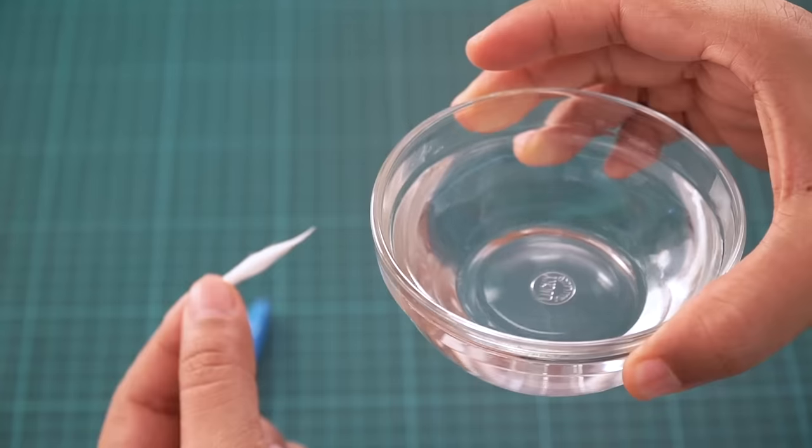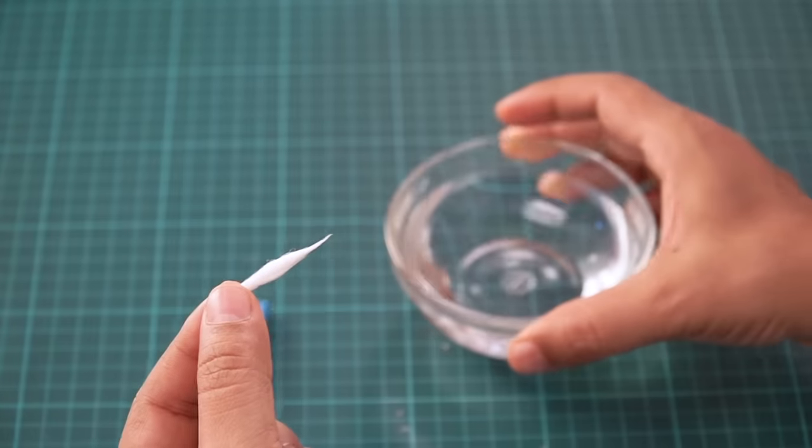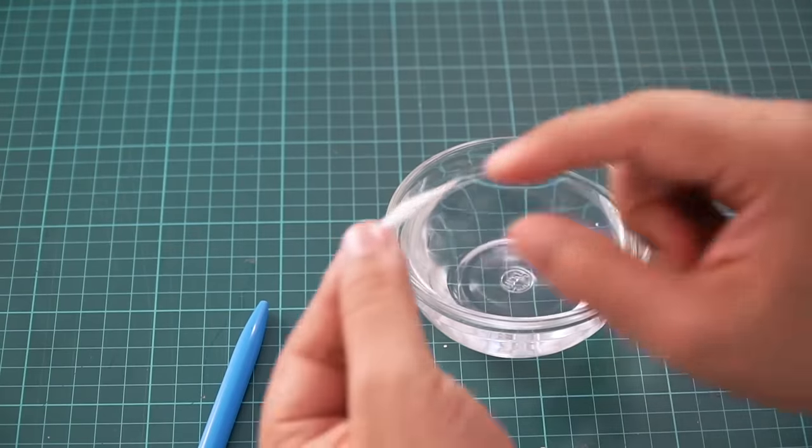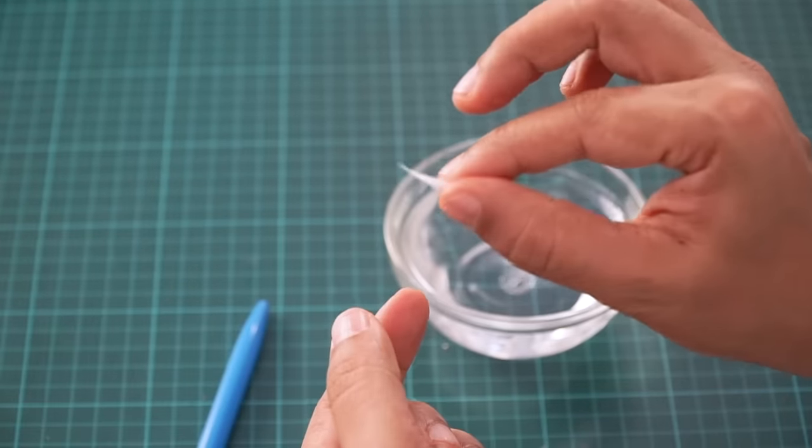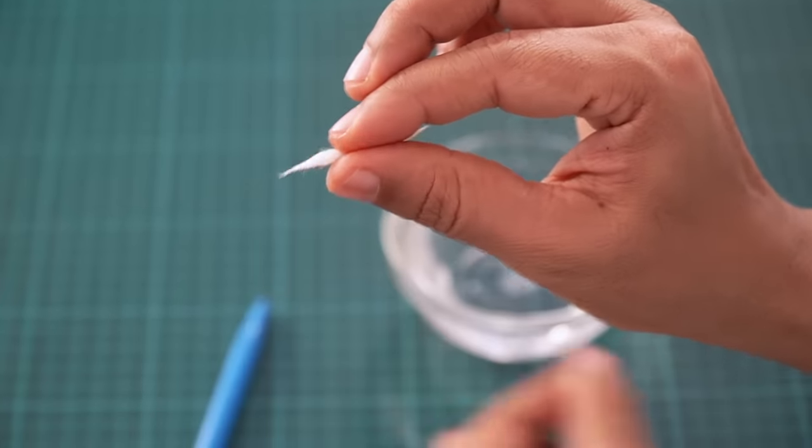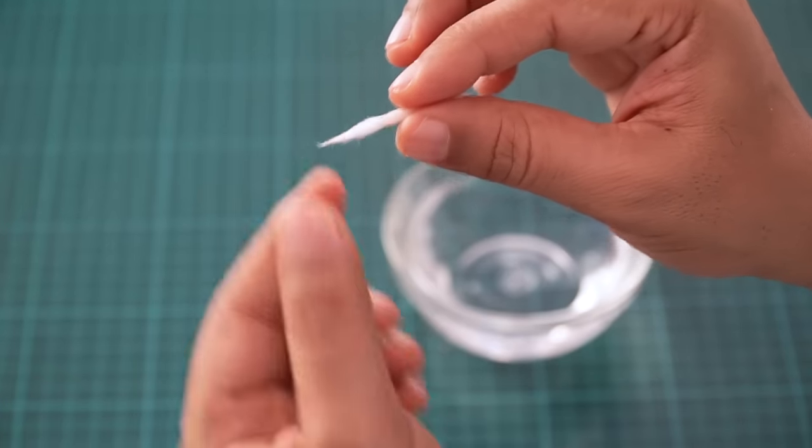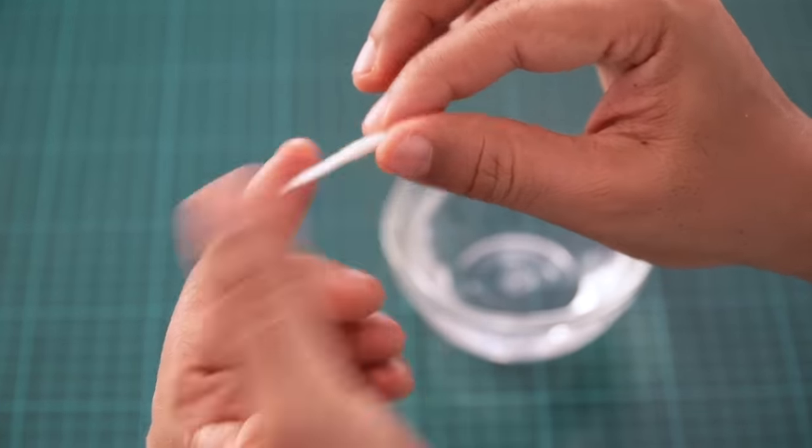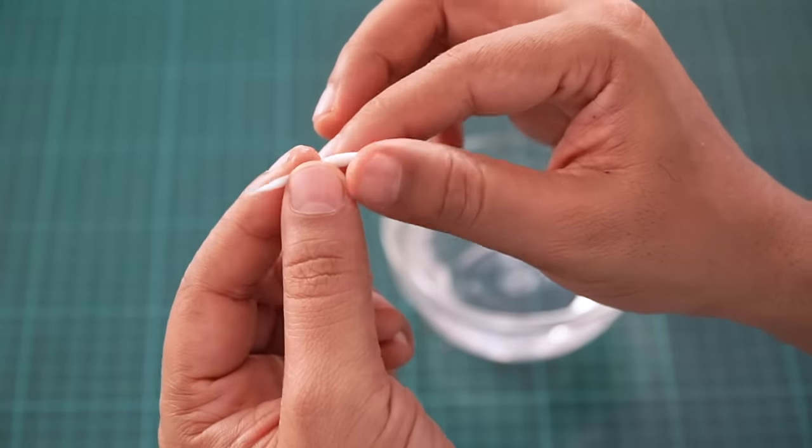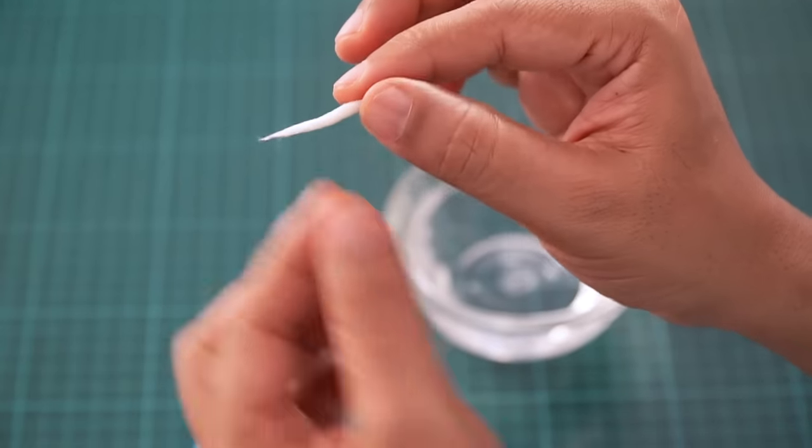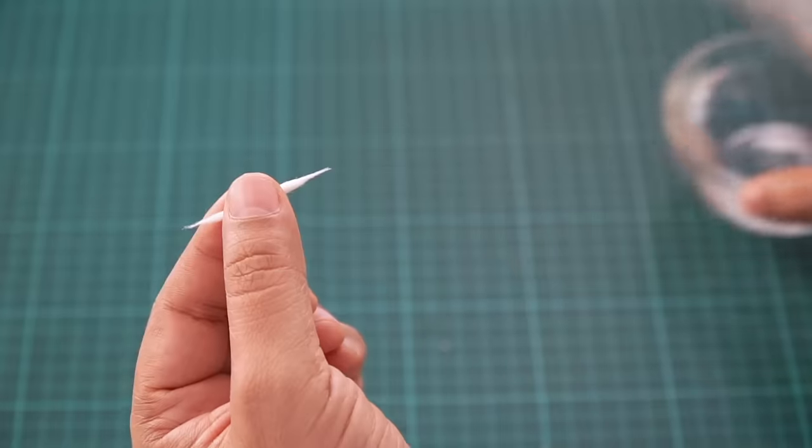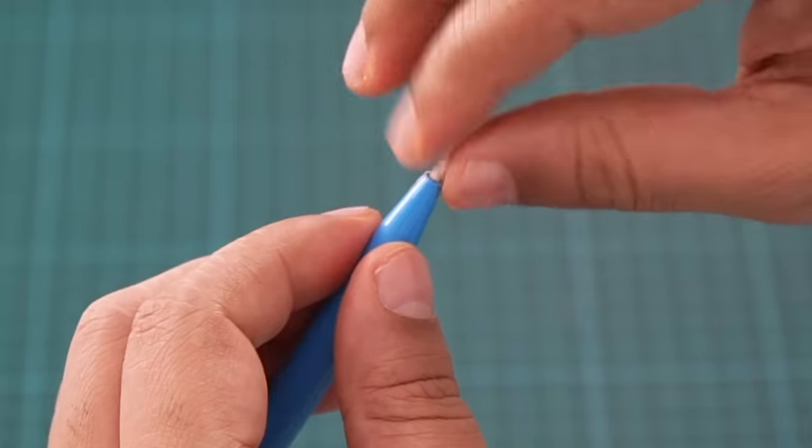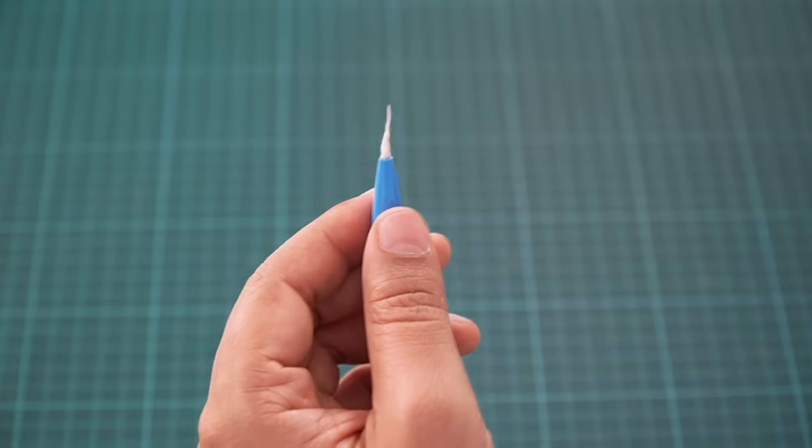And now what you need to do is take some water and just dip your finger in water. And then roll this again. So what we're doing here is we are wetting the cotton a little bit because again, water is a great conductor for electrical charge. So let the cotton absorb the water a little bit. Don't dip this in water. You need to apply very little water.